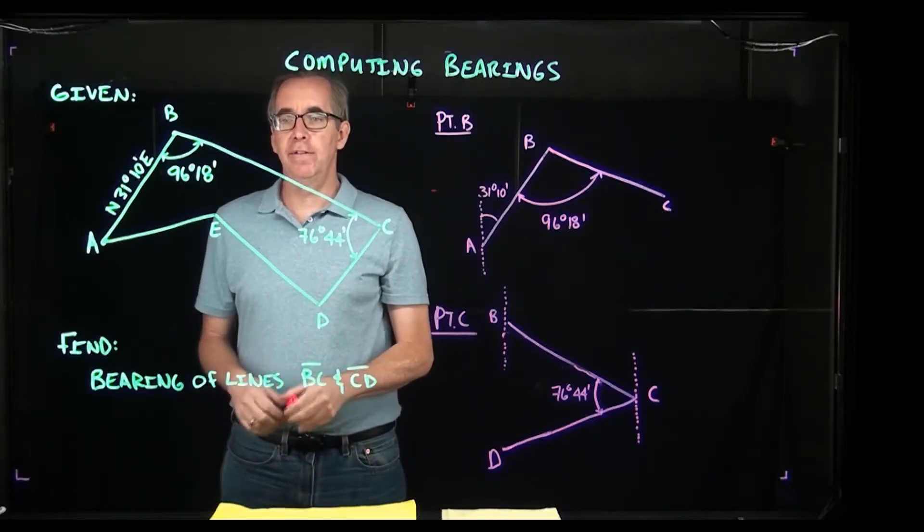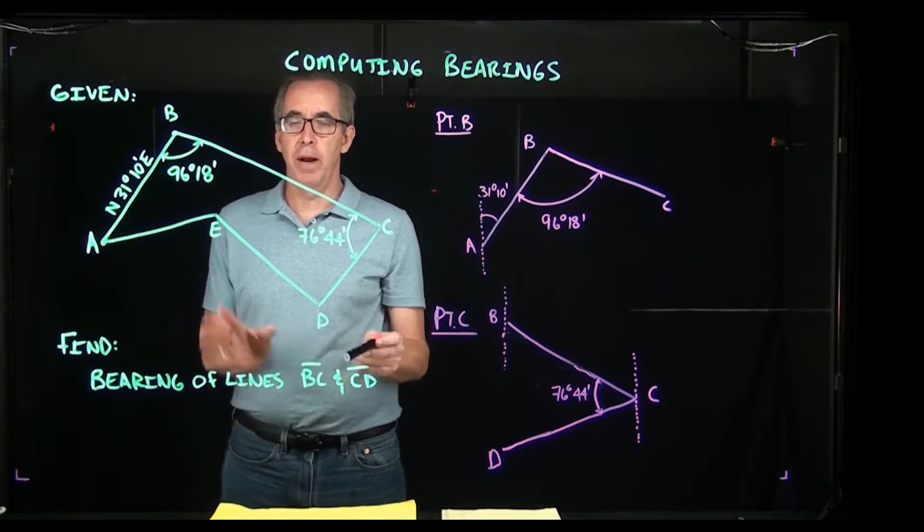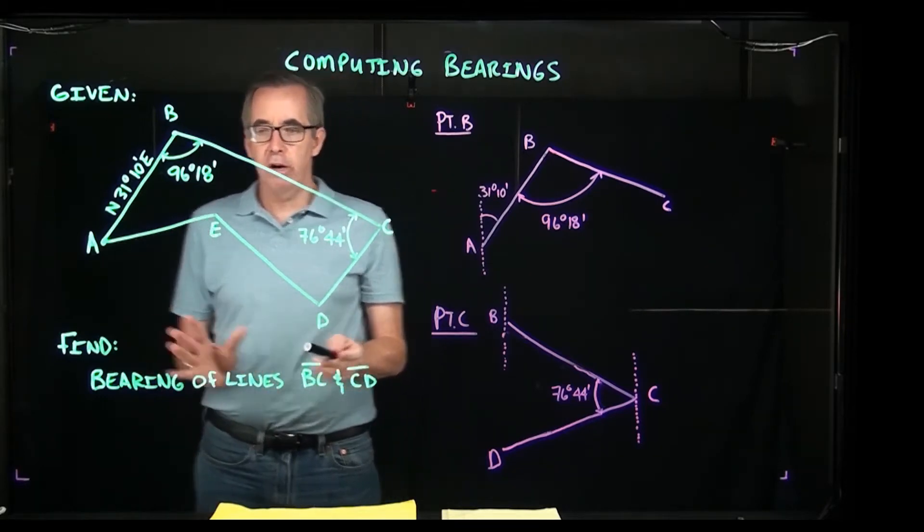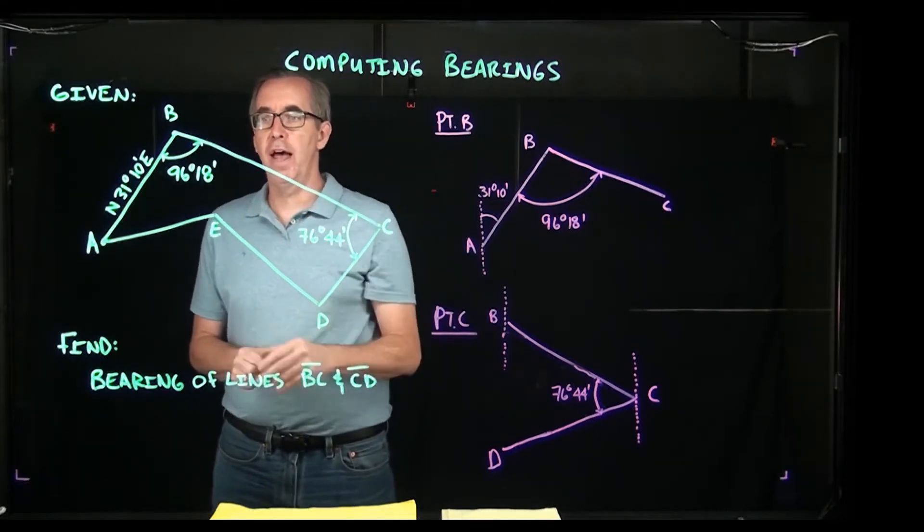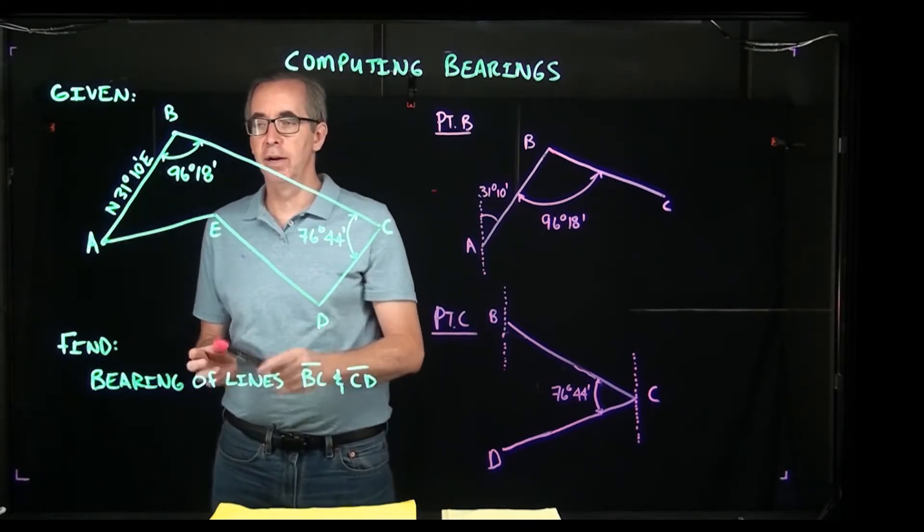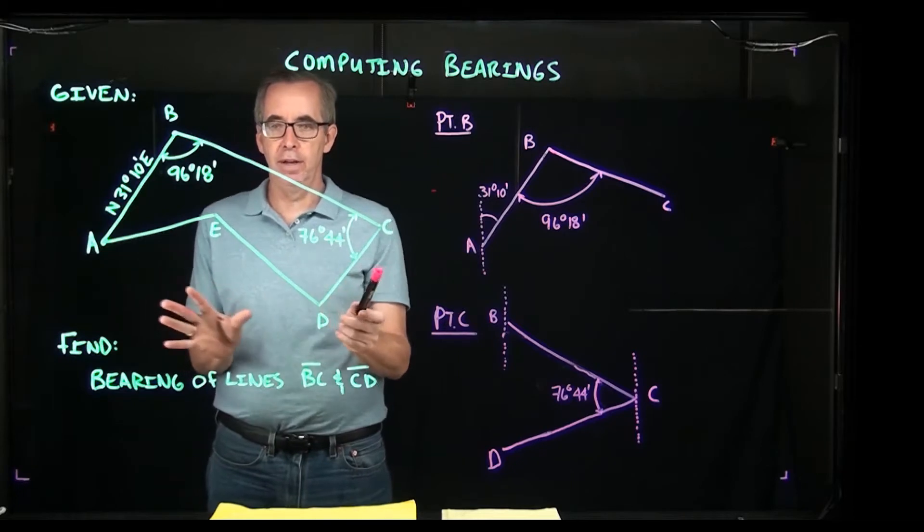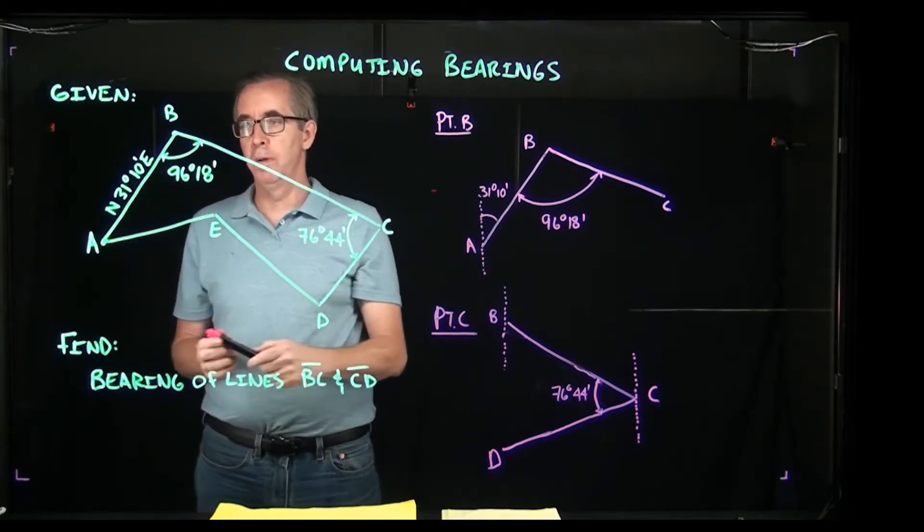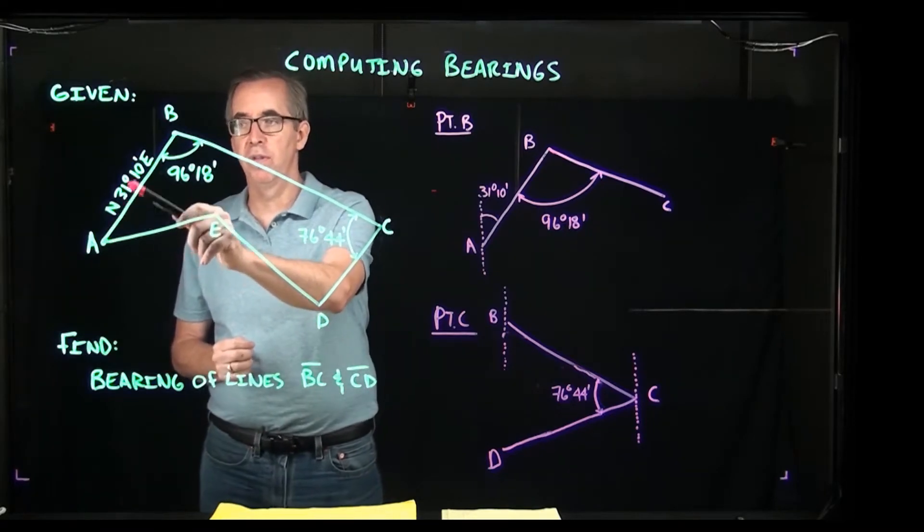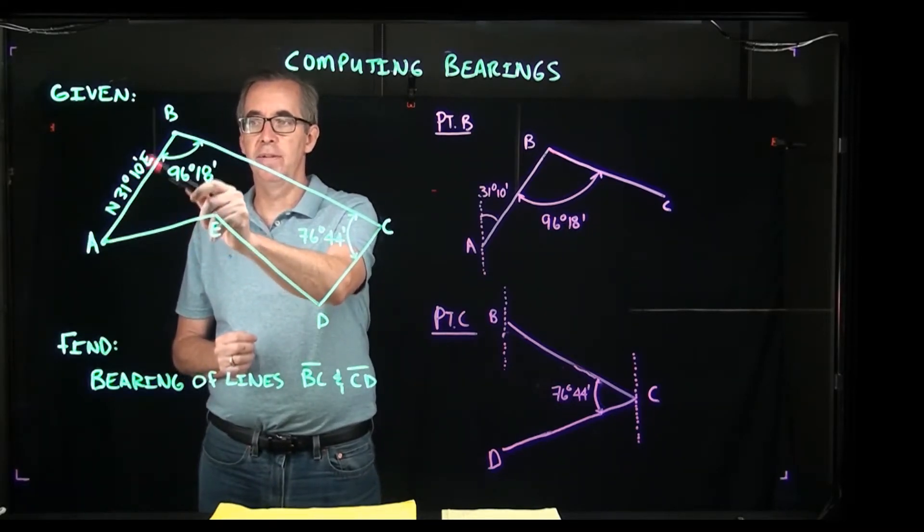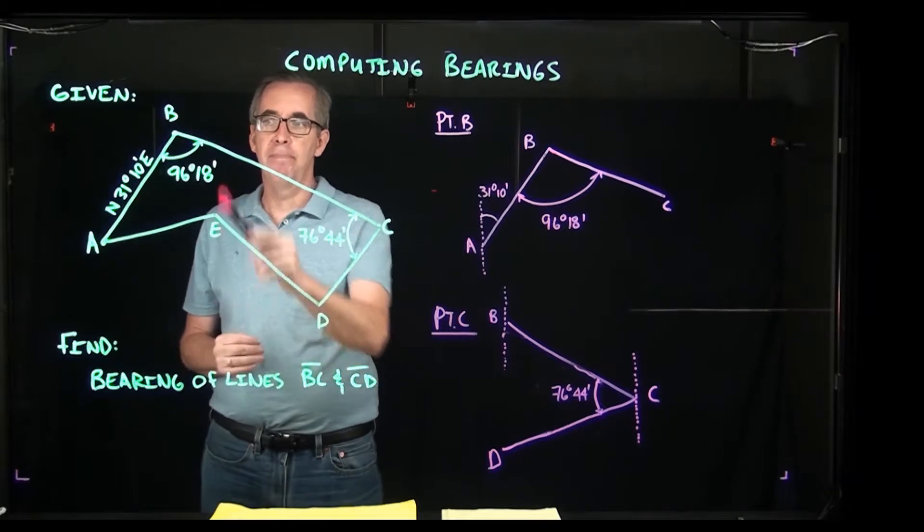In this example we're going to compute the bearings. The scenario we have is a closed traverse. We're given this closed traverse and we know the bearing, for example from point A to B is given to us as north 31 degrees 10 minutes east.